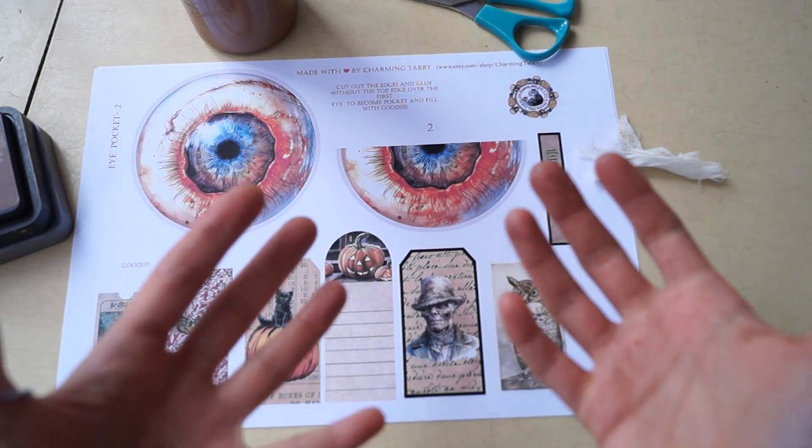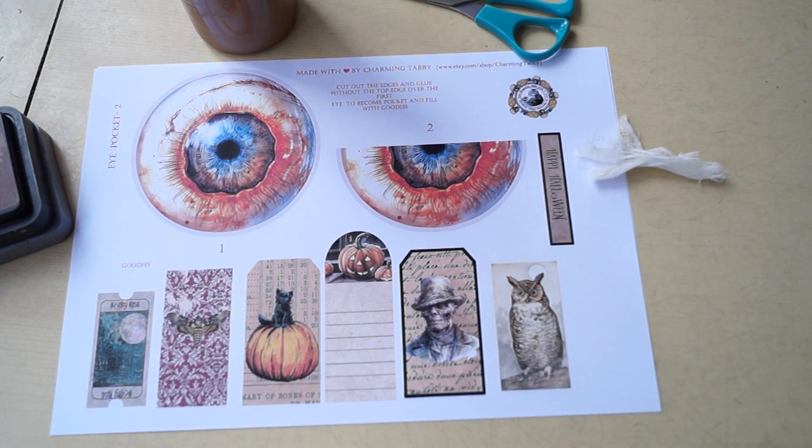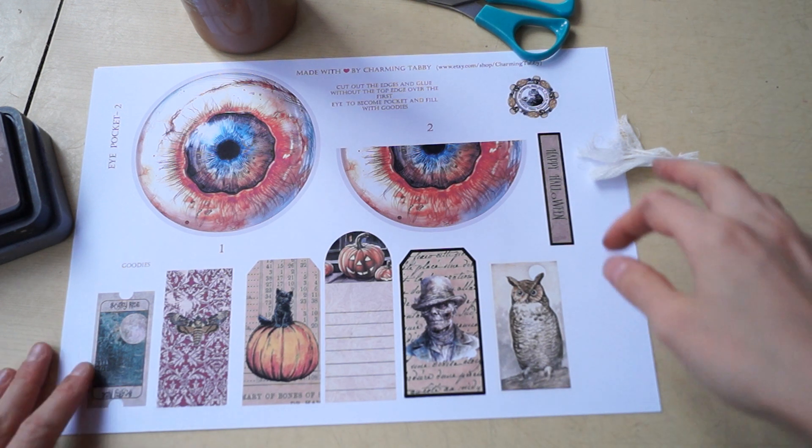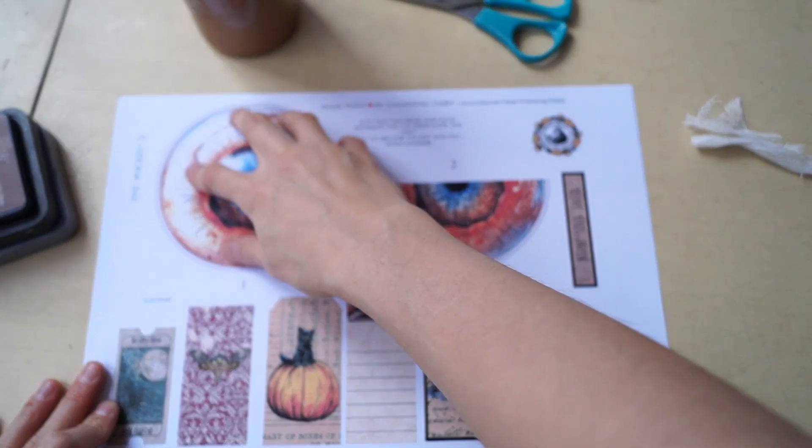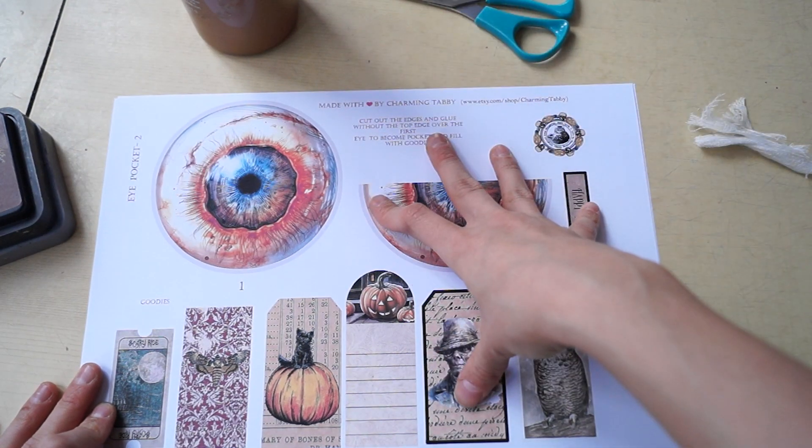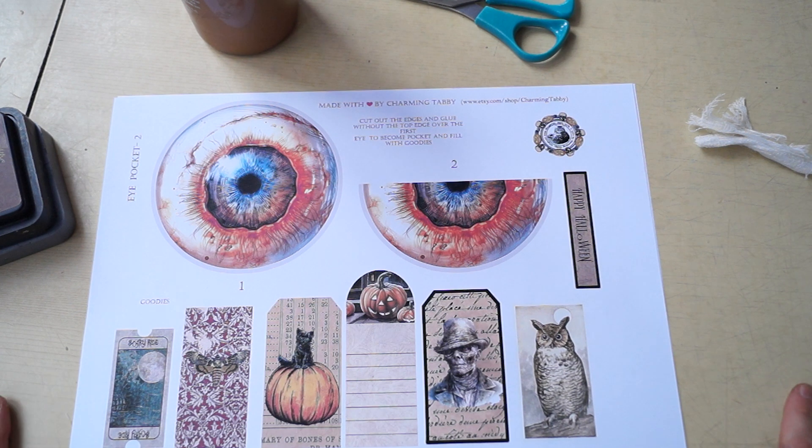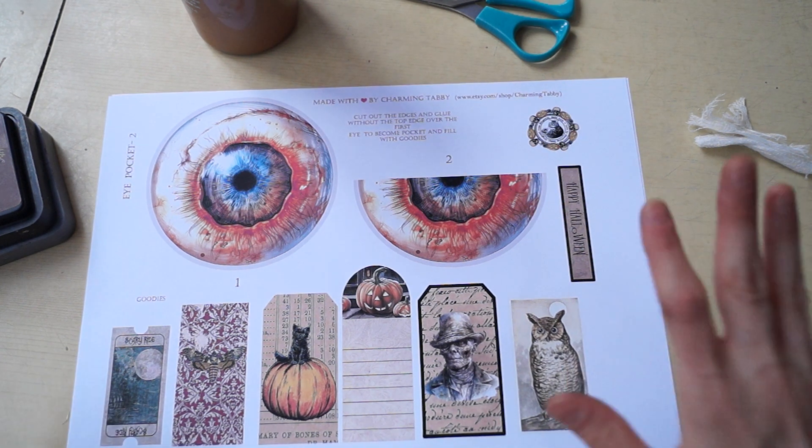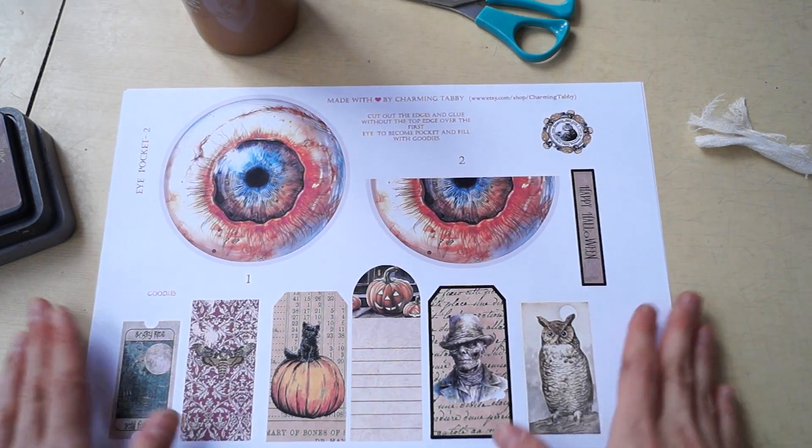Hello beautiful people, I'm Polly from Charming Tabby. In this video I'm going to show you how to assemble this eye pocket that is available in my Etsy shop. I think the design is very scary and creepy.